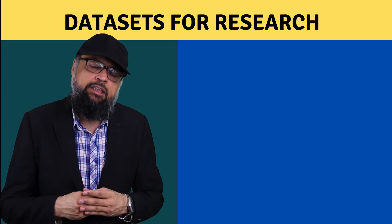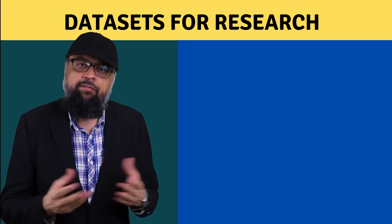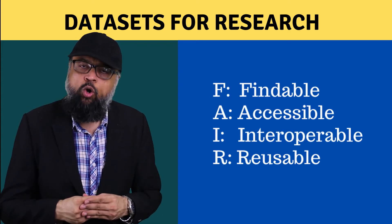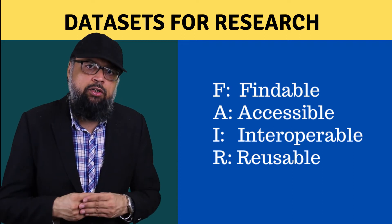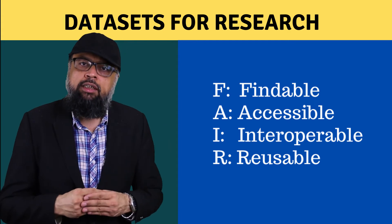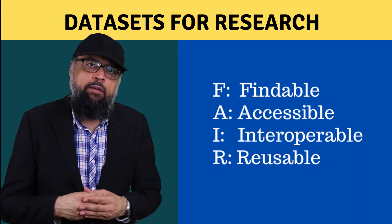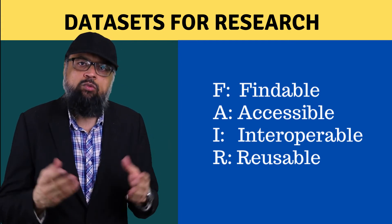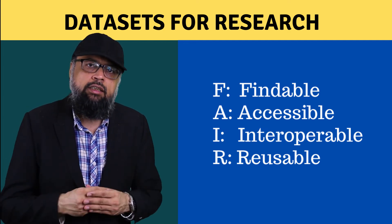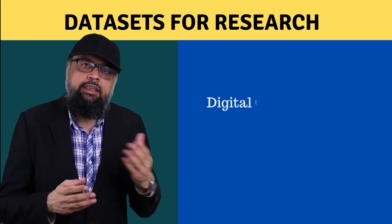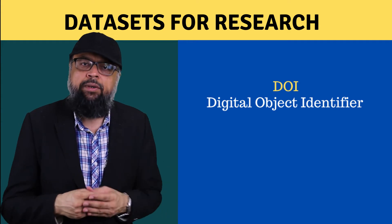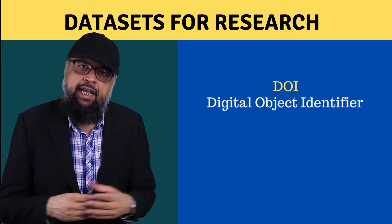What are the FAIR principles of data? In FAIR, F stands for Findable, A for Accessible, I for Interoperable, and R for Reusable. When we say data should be findable, it means that these data sets must have some DOI, or digital object identifier, similar to journal papers or articles which also have a DOI.